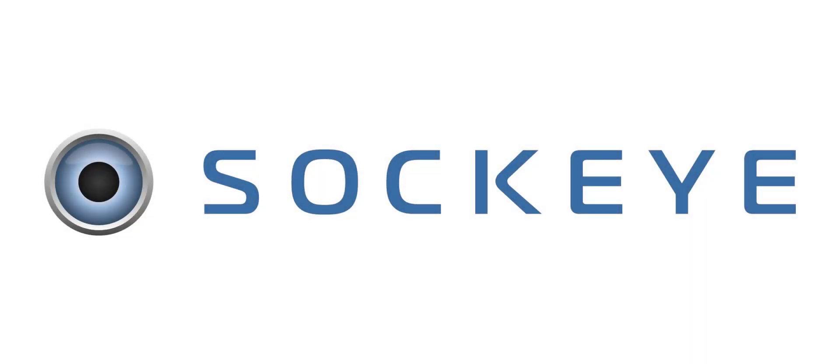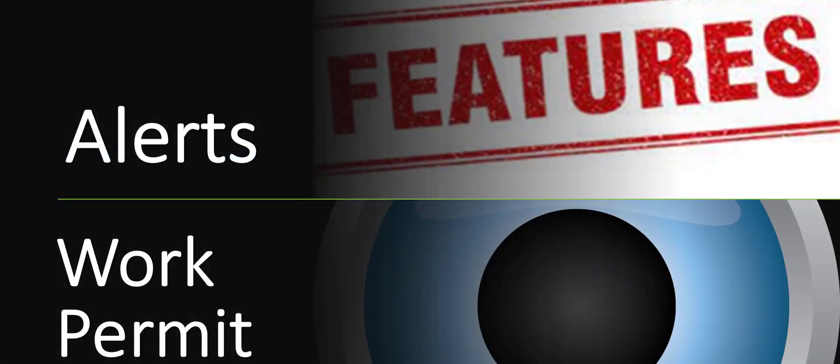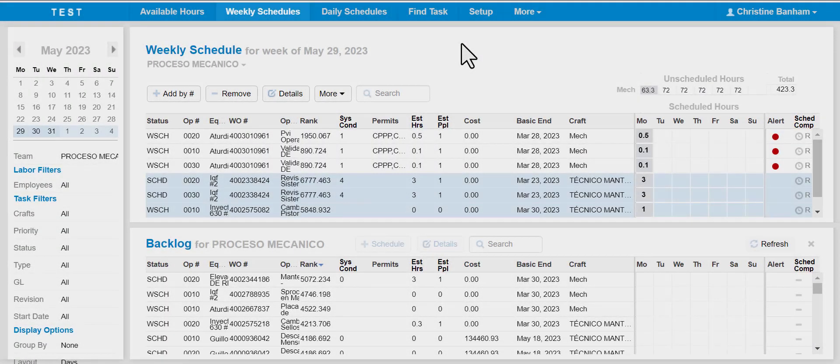Work permits identified within the alerts. The permit's alert identifies specific permits required to complete the assigned work. Please note that work permit alerts will require additional integration work and time from both parties.